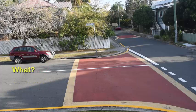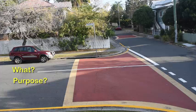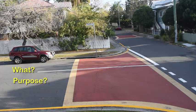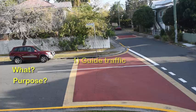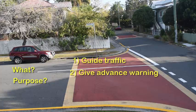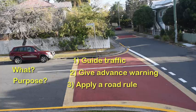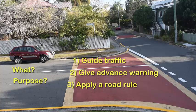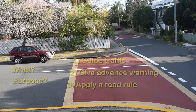What are these red painted areas exactly and what is their purpose? These red painted areas are a kind of pavement marking and they are used to guide traffic, give advance warning, or apply a road rule. Any time you come across these areas, you need to be alerted — you need to know something is going on, something is changing — and look for the signs to find out what those changes are.